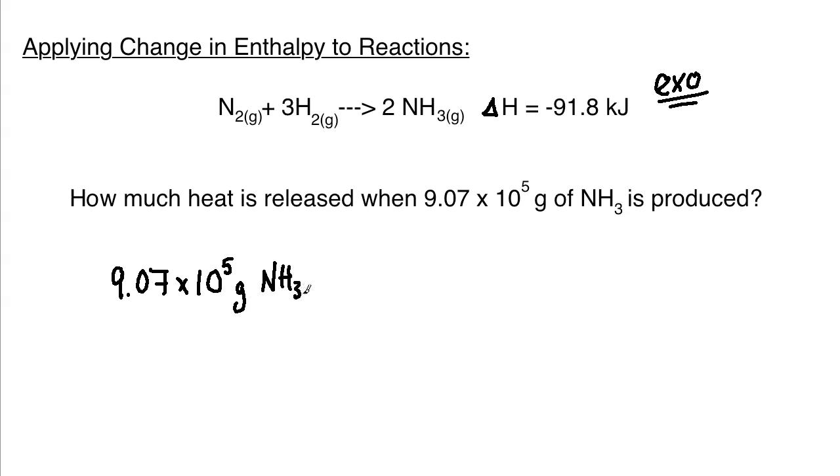The way that we would set this up: we have 9.07 times 10 to the fifth grams of ammonia gas. We need to convert into moles, as we usually do for most stoichiometric calculations. Every one mole of ammonia - your nitrogen is 14.01, and the hydrogens are 1.01. I always go to two decimals when I'm doing my molar masses. You're going to get 17.04 grams of ammonia gas for every mole of ammonia gas.